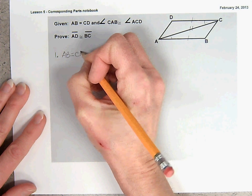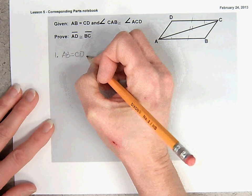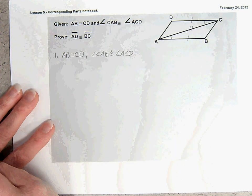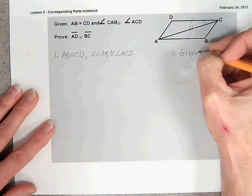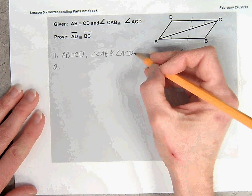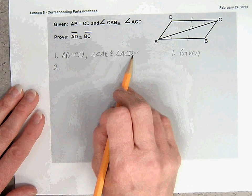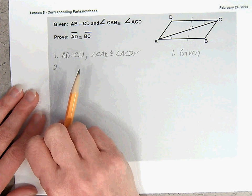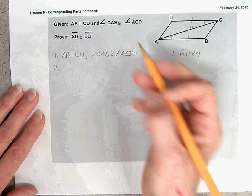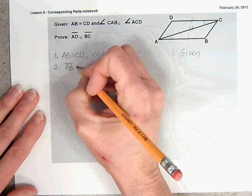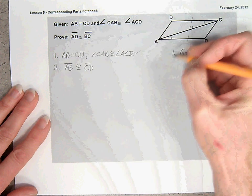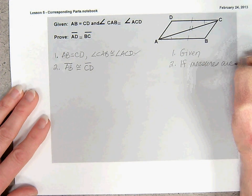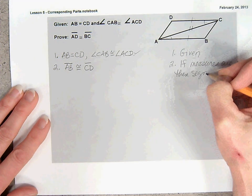So the measure of AB equals the measure of CD, and angle CAB is congruent to angle ACD — that is given. Our next statement: we need to state that segment AB is congruent to segment CD, because if the measures are equal, then the segments are congruent.